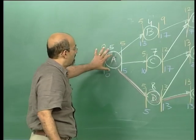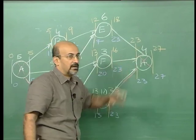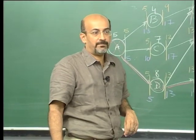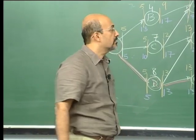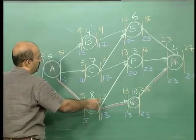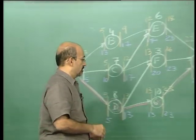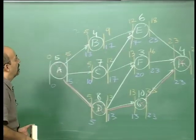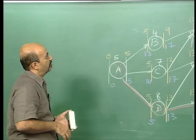Here we know that A, D, G, H are on the critical path. This is on the critical path and we have no floats on that. Let us take B. Obviously B, C, E, F have floats.